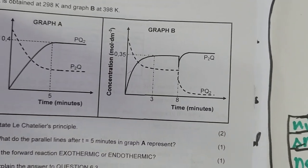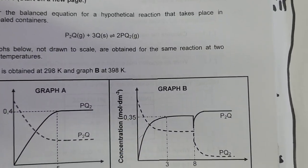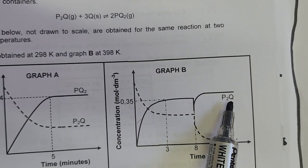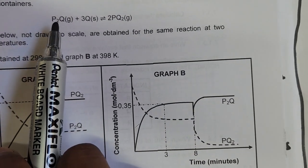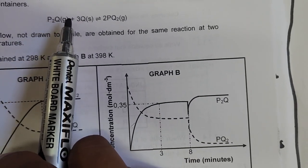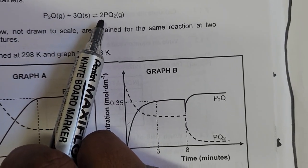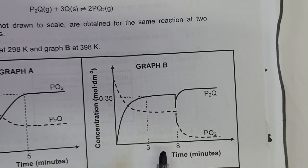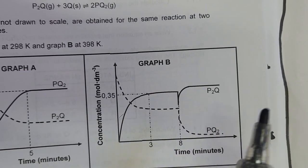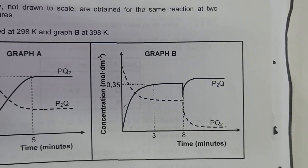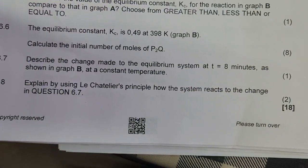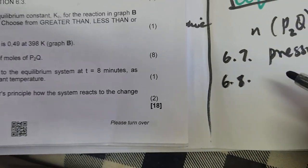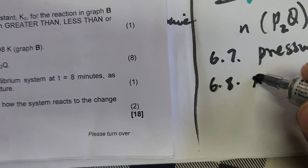When pressure is decreased, P₂Q — the reactant — gets more. But looking at the equation: the left side has 1 mole of gas and the right side has 2, so decreasing pressure should favor the forward reaction. This is a contradiction with the graph, but let's answer using Le Chatelier's principle and ignore the graph, since the graph appears to be faulty.